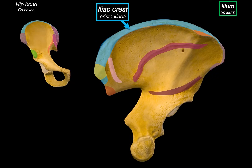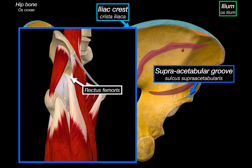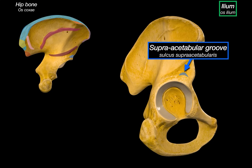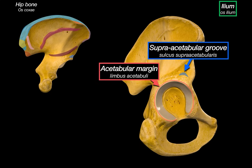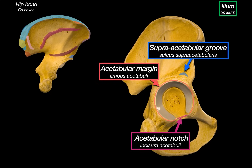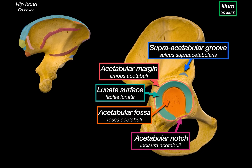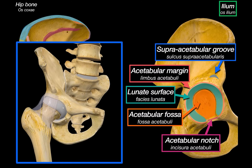Another landmark is the supra-acetabular groove — a small depression just above the acetabulum that serves as the origin for the reflected head of the rectus femoris. And that brings us to the acetabulum, the socket of the hip joint. It is composed of several parts: the acetabular margin forms the rim; the acetabular notch at the bottom remains incomplete until bridged by the transverse acetabular ligament; the lunate surface is the curved articular part that the femoral head actually contacts; and the acetabular fossa is the central non-articular area filled with fat and the ligament of the head of the femur.